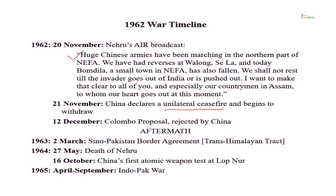The Non-Aligned Movement, of which Nehru was a leader, tried to mediate. In Colombo, non-aligned countries led by Sri Lanka, Egypt, Indonesia, and Ghana gave certain proposals. India was not happy because the proposals did not declare China an aggressor, while they asked China to withdraw without asking India to do so. China basically rejected the Colombo proposals. This is how the 1962 war ended in humiliation for India and its first Prime Minister, Jawaharlal Nehru.